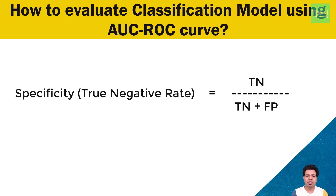When we decrease the threshold, we get more positive values, which increases sensitivity and decreases specificity. Similarly, if we increase the threshold, we get more negative values, thus we get higher specificity and lower sensitivity.